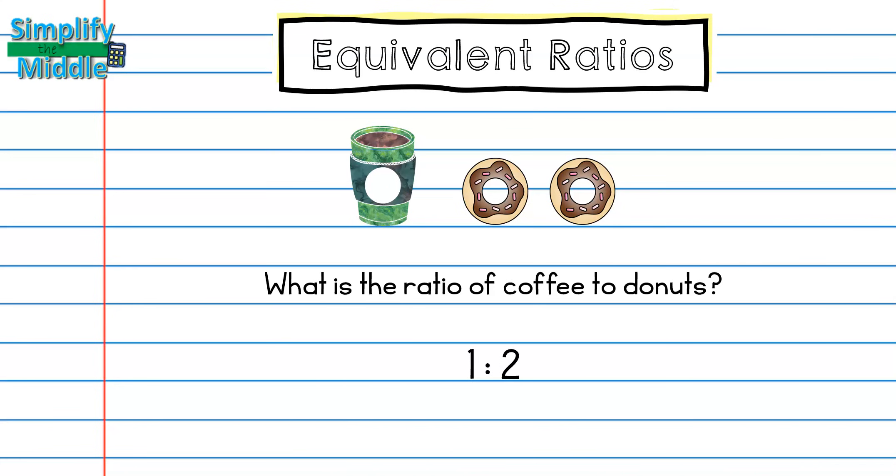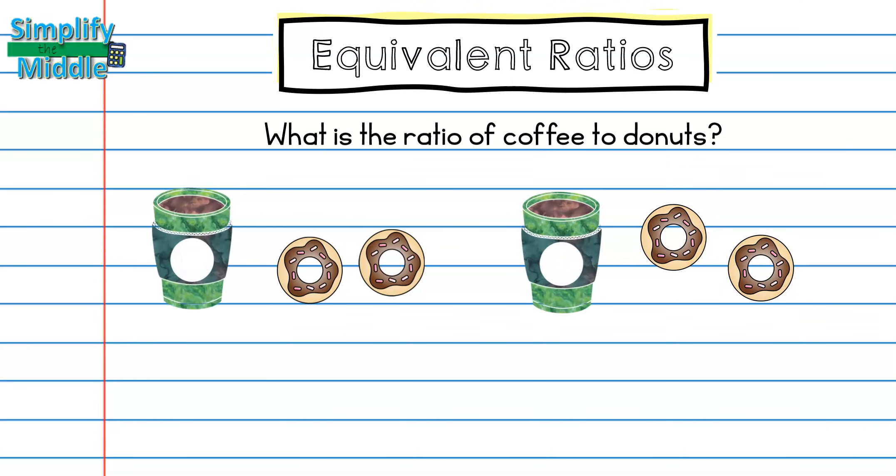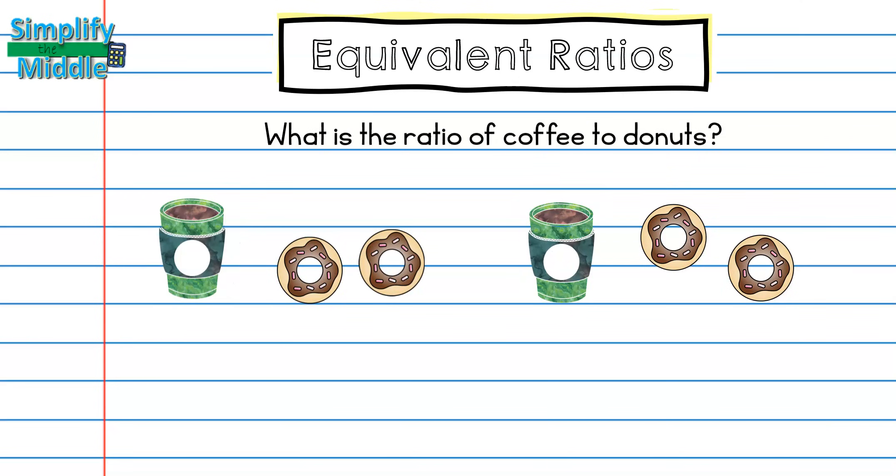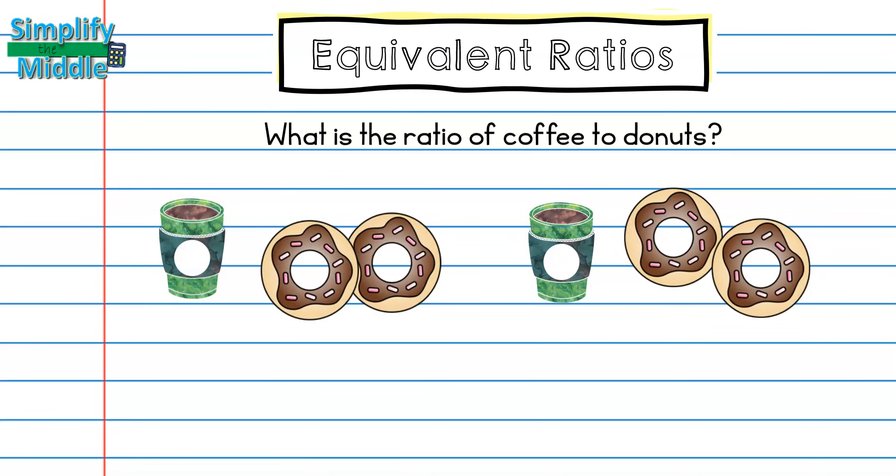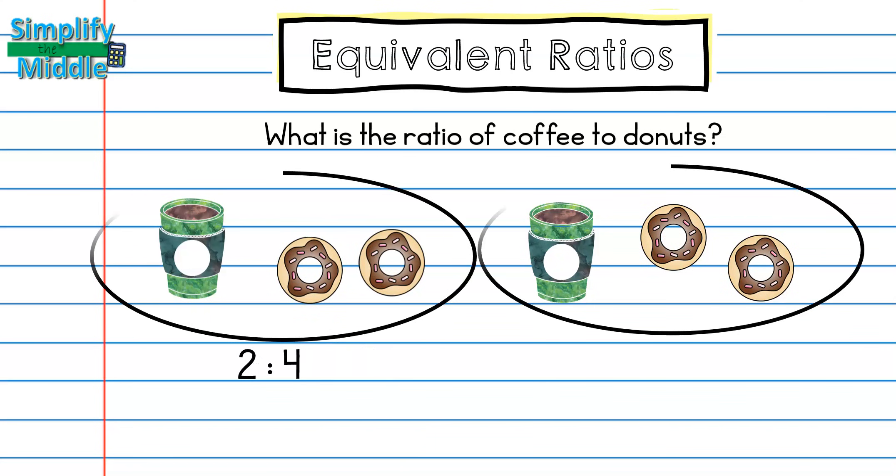What if we had more coffee and donuts? This time I have two cups of coffee and four donuts. So the ratio is two to four. If we were to separate our coffee and donuts into equal groups, we would see we have our original ratio of 1 to 2. That means that 2 to 4 and 1 to 2 are equivalent ratios.